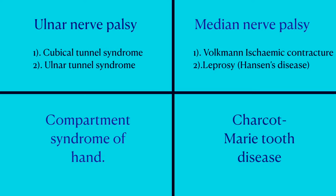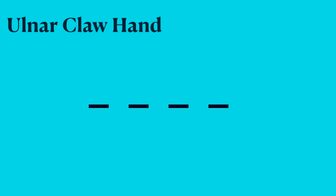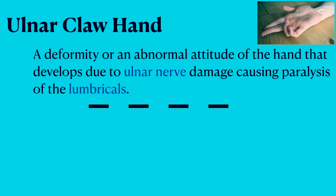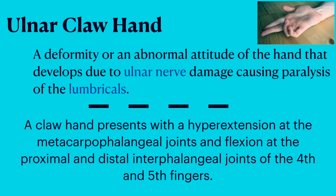Coming to ulnar claw hand, also called spinster's claw — it's a deformity or abnormal attitude of the hand that develops due to ulnar nerve damage causing paralysis of the lumbricals. A claw hand presents with hyperextension at the metacarpophalangeal joints and flexion of the proximal and distal interphalangeal joints of the fourth and fifth fingers. The lumbricals are responsible for flexion of metacarpophalangeal joints and extension of interphalangeal joints normally.